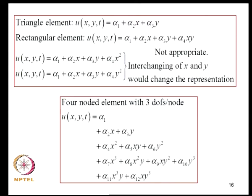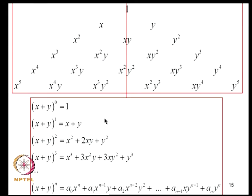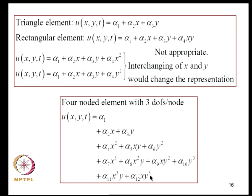For a 4-noded element with 3 degrees of freedom per node, 12 terms are needed. The first 10 are straightforward from the Pascal triangle, but symmetry must be maintained for the remaining terms. To preserve geometric invariance, we select X³Y and XY³ — terms closest to the axis of symmetry. One could also consider X²Y², but the next term cannot be selected symmetrically. As a rule, terms closest to the axis of symmetry are selected. This will be revisited when discussing plate bending.